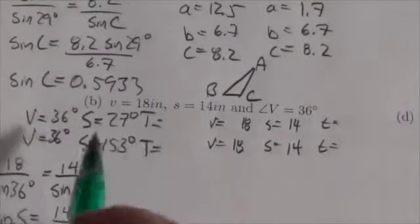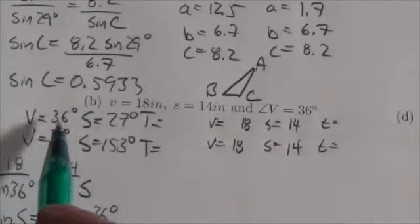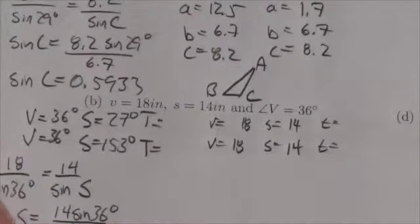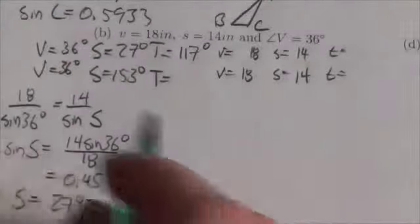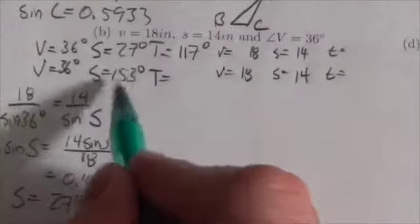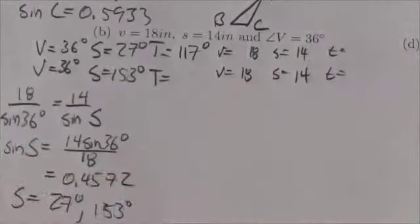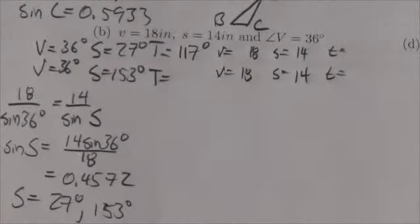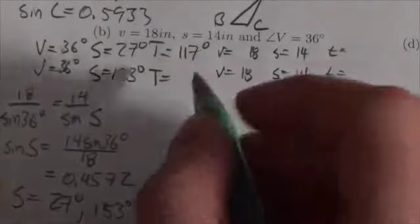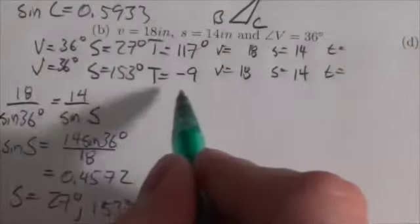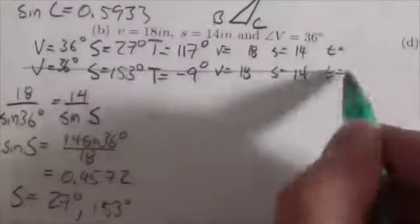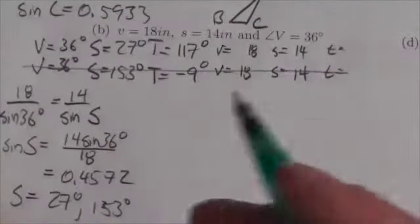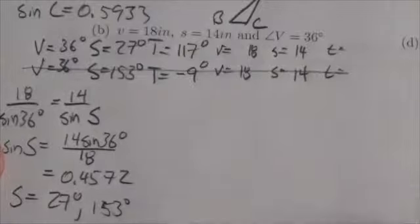Now, let's take a look at this first one here. If it is in fact 36 and 27, so 180 minus 36 minus 27, angle T would be 117 degrees. Not a problem. I am totally okay with that. If S is actually supposed to be this obtuse angle, so 180 minus 36 minus 153, not so good. T is supposed to be negative 9 degrees. Well, that doesn't make any sense. So basically, that second triangle there doesn't exist. We're only going to get one solution here.